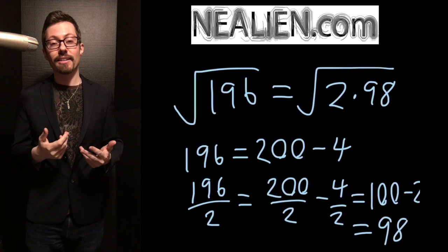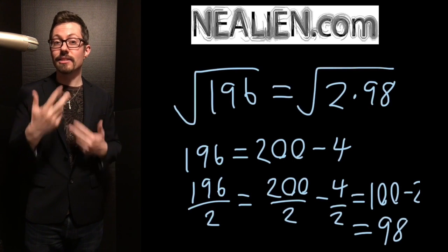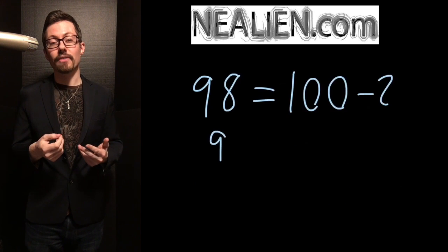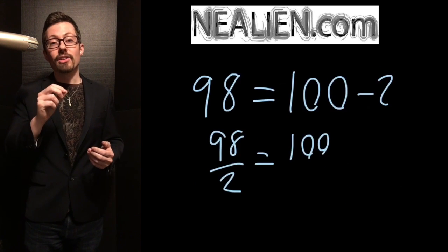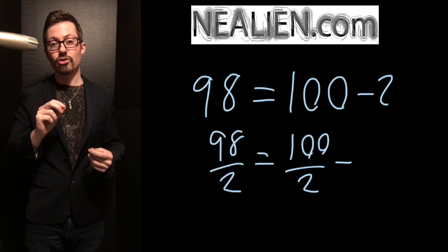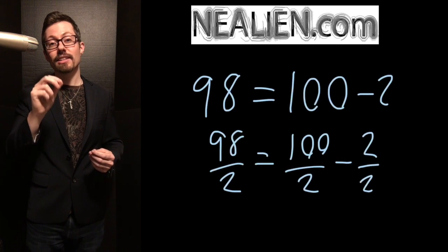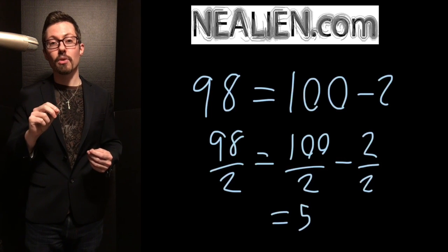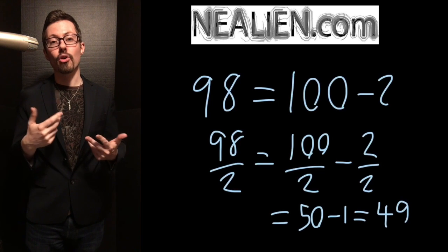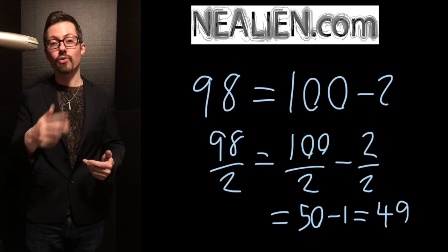Just by looking at it, you can see that 98 is still an even number, so you can divide that by 2. Again, you can use this trick. 100 minus 2 is 98. Therefore, 100 divided by 2 is 50, negative 2 divided by 2 is minus 1. So 50 minus 1 is 49. Therefore, 98 divided by 2 is 49.